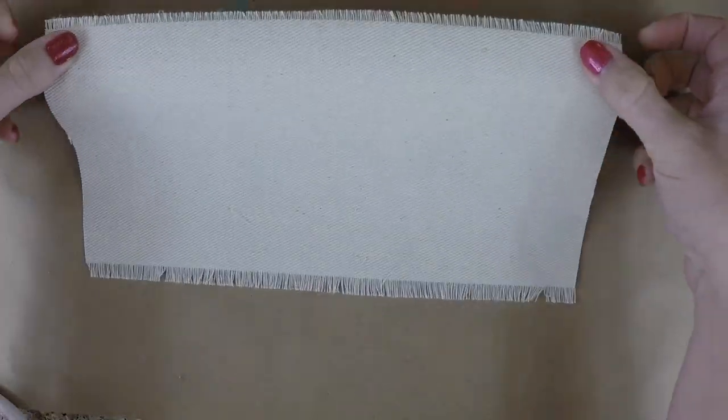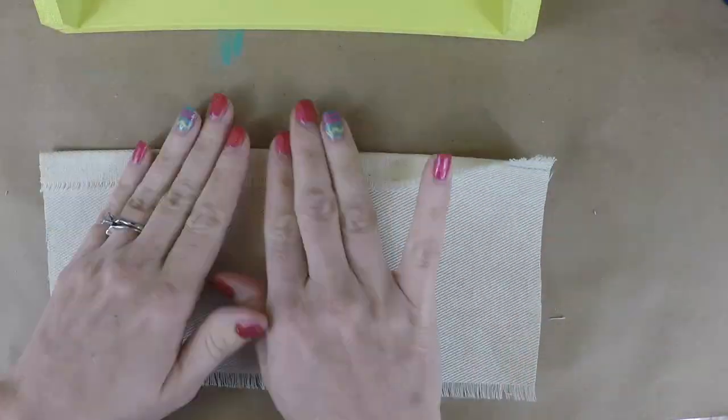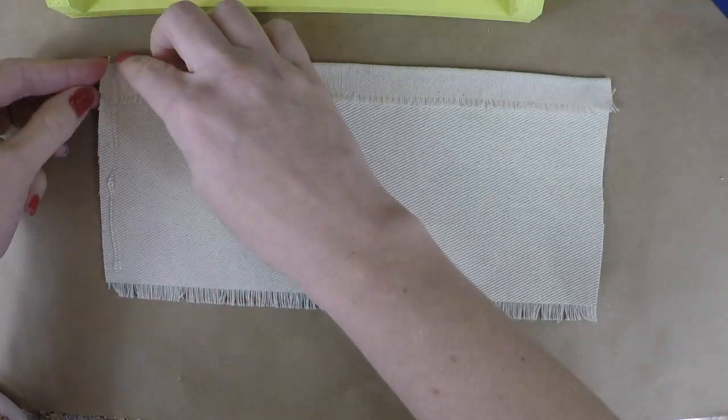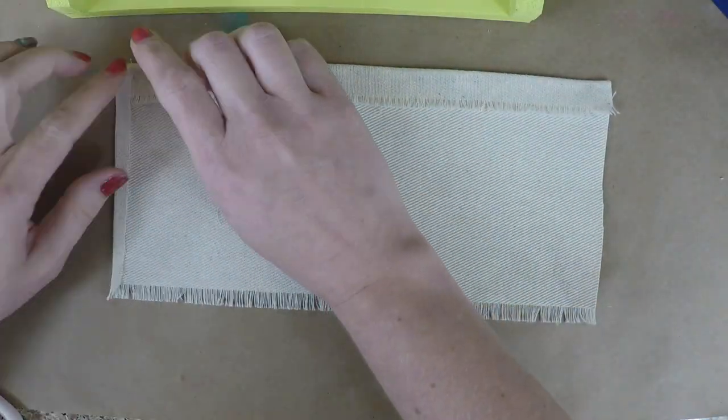If you want a clean edge, you can fold it over and hot glue it so you don't see the frays on the top and the sides. I left mine on the bottom because I like the look it gives.